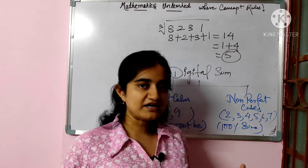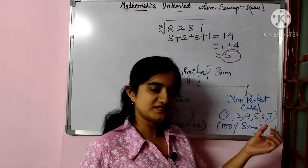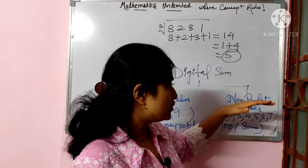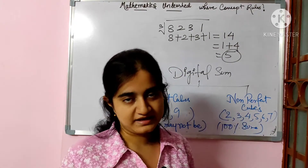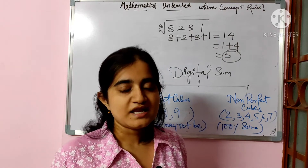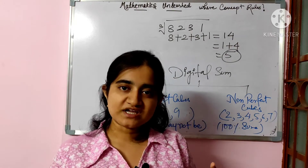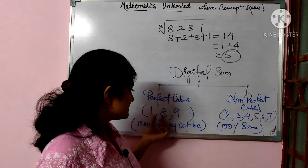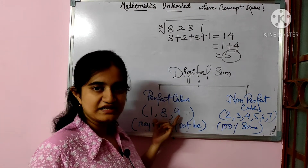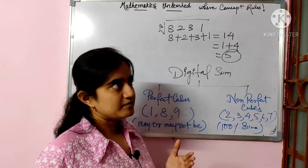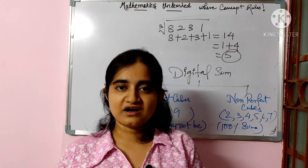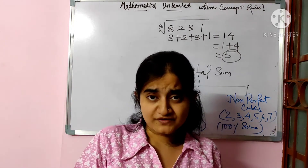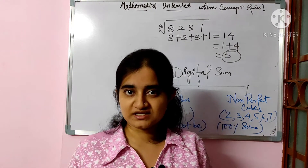Koi bhi number ka digital sum agar 2, 3, 4, 5, 6, ya 7 aaya, toh blindly ek cheez karni hai — woh non-perfect cube hai. It's 100% sure. Lekin yaad rakho, kuch non-perfect cubes ka digital sum bhi 1, 8, ya 9 aa sakta hai. Jab 1, 8, ya 9 aaye, aap blindly kuch nahi keh sakte — perfect hai ya non-perfect hai, kuch bhi nahi keh sakte.